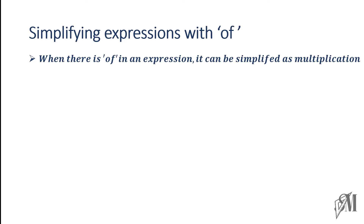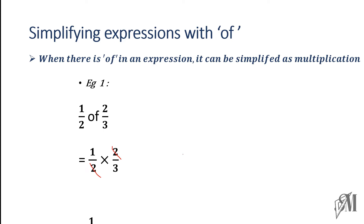Let us see how to do this through an example: half of two over three. The first step is to replace 'of' with the multiplication sign. Then you can see the twos can be cancelled — I cancel this two with this two, and then we simply multiply. You get the answer as one over three. So it's very simple: instead of 'of' you put a multiplication sign. Let's look at another example.